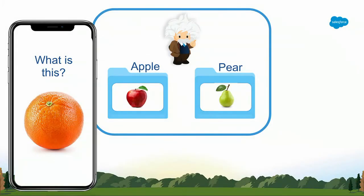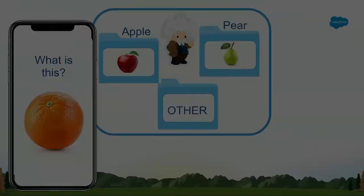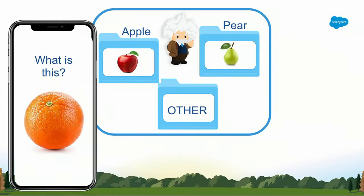What happens if we send in an image that Einstein has never even seen a label for? In our example, it knows two words: apple and pear. It doesn't have a word for orange, so it might try to force it into one of those two categories. If Einstein says an orange is an apple, we might think the technology is broken — but in reality, it only knows two words and can't categorize it any other way. In addition to the feedback loop, another useful thing is giving it the concept of 'other' — a catch-all miscellaneous bucket. If it's not an apple or a pear, and it doesn't know what it is, it can categorize it as 'other.'